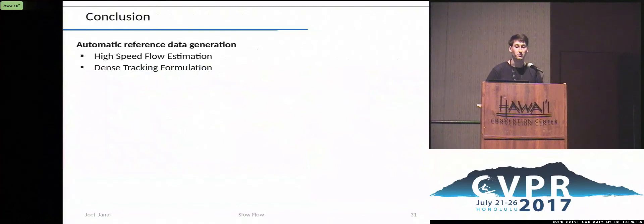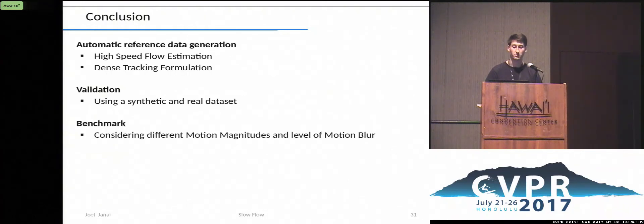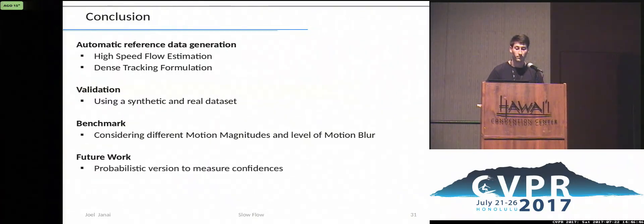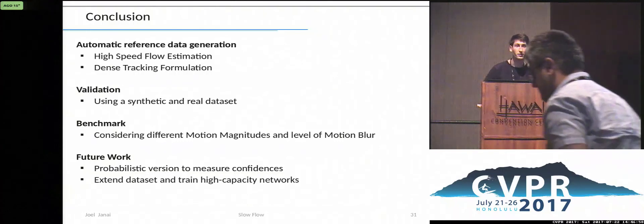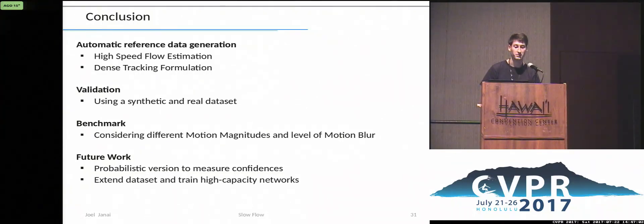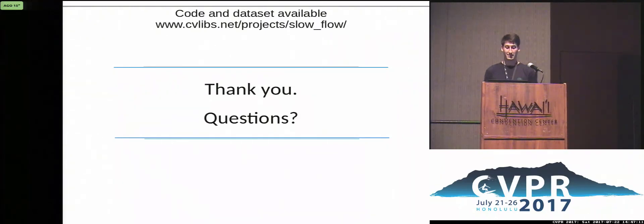To summarize this talk, we presented a methodology to generate accurate reference data from high-speed videos, we validated our method on synthetic and a new real dataset, and created a real-world benchmark to compare the state of the art on different motion magnitudes and levels of motion blur. In future work, we are interested in a probabilistic version of the approach that allows measuring confidences. Currently the benchmark dataset consists of only 160 examples, but we are working on extending this to use it for training convolutional neural networks. The code and dataset are available on our project webpage.